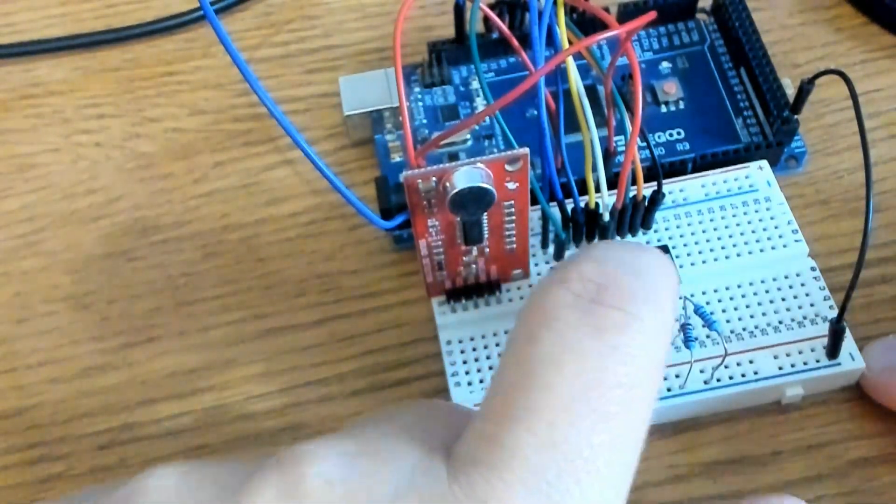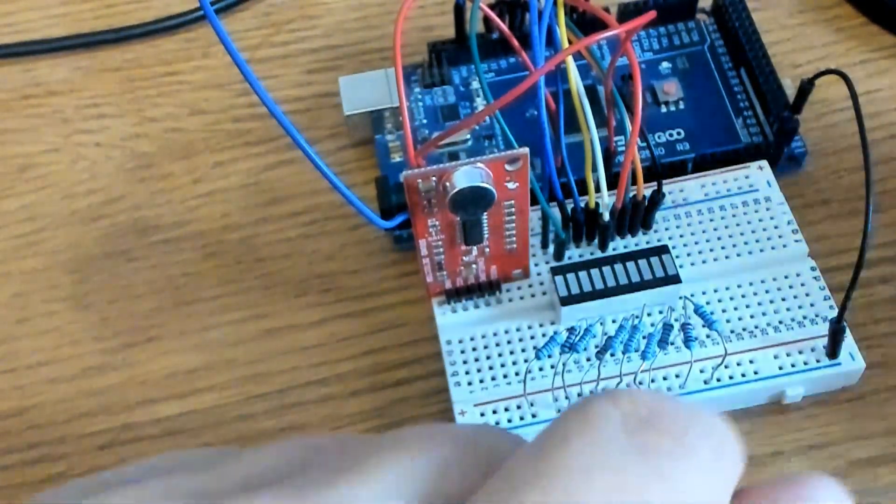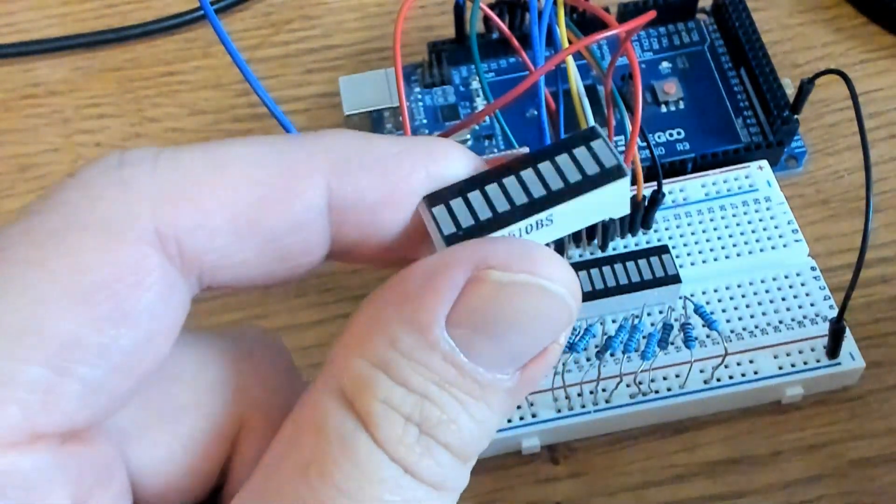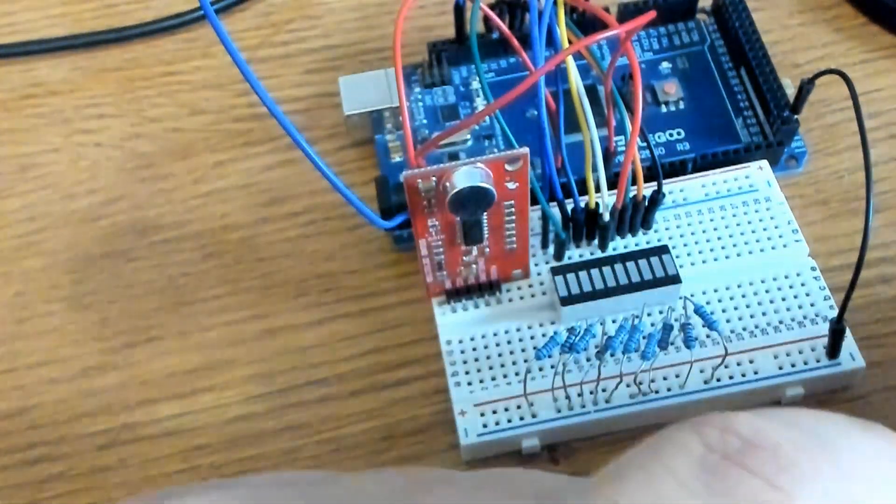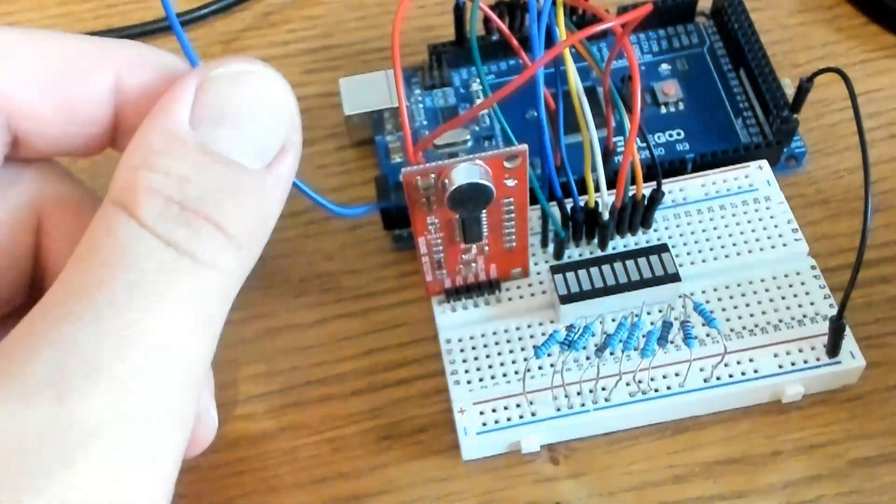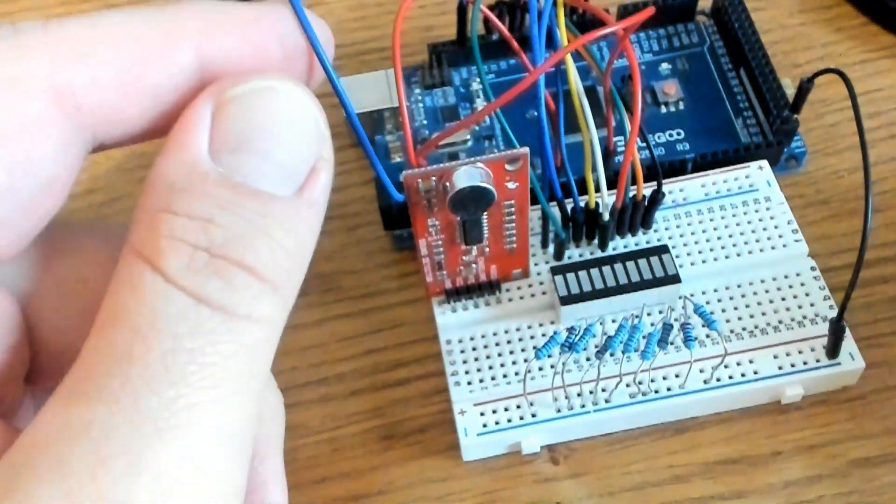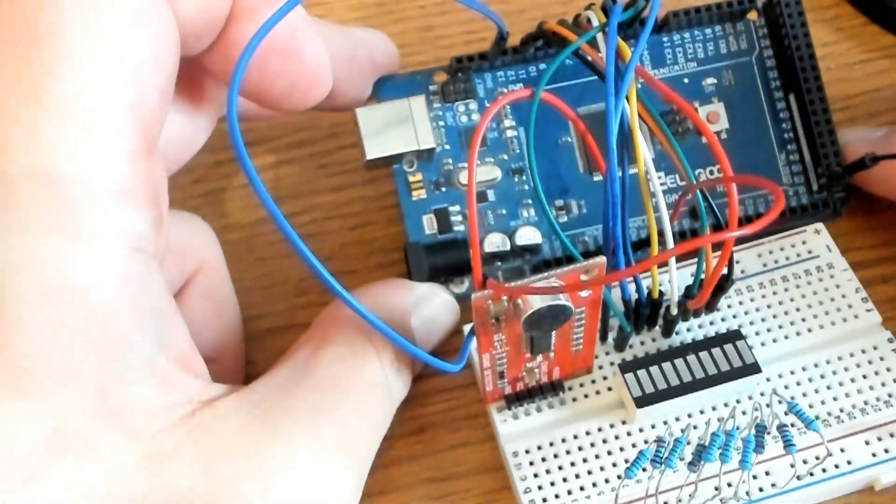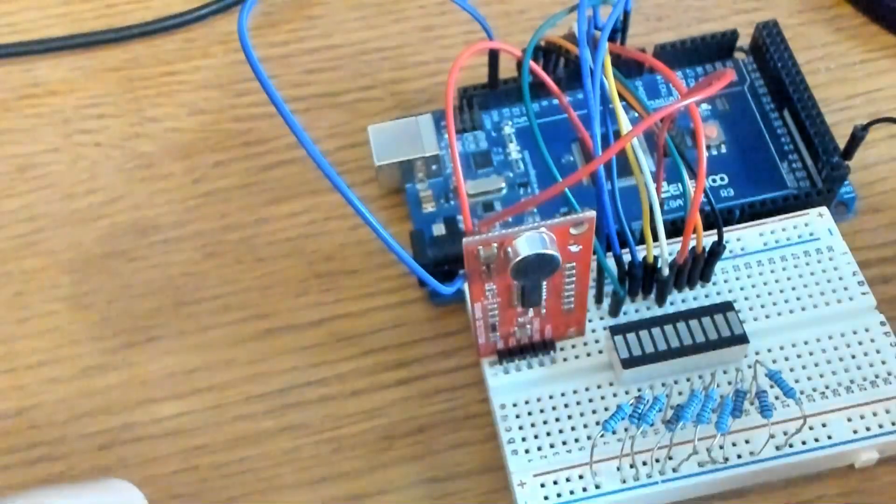You'll also need a 10 segment LED light bar which is this guy right here. I bought this online, a pack of 10 off eBay actually. And I'll be using some male to male jumper wires to connect everything together. I think I've got 13 total and I'm using Arduino Mega and that's all you'll need for this first part.